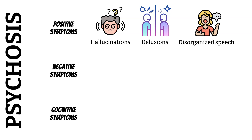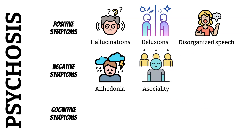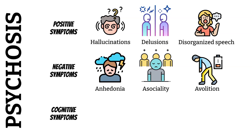Negative symptoms refer to a loss or absence of normal behaviors — think negative as in minus. These symptoms take away from what would be considered normal experiences, and are behaviors or emotions that are deficient or lacking. Examples include anhedonia, where the person may not enjoy things they used to enjoy. Asociality — a lack of social drive, increased desire to spend time alone, difficulty socializing or holding down a job. And avolition — difficulty initiating or persisting in purposeful activities such as eating, showering, paying bills, or buying groceries.